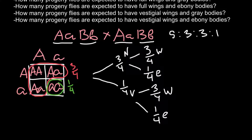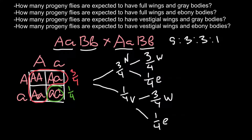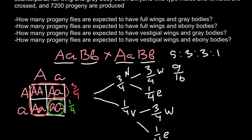The first question asks how many progeny flies are expected to have full wings and gray bodies — normal size wings and wild-type body color. This is going to be nine-sixteenths. We multiply the two fractions: three-quarters multiplied by three-quarters equals nine-sixteenths. But this is not our final answer, because the total number of progeny produced is 7200.